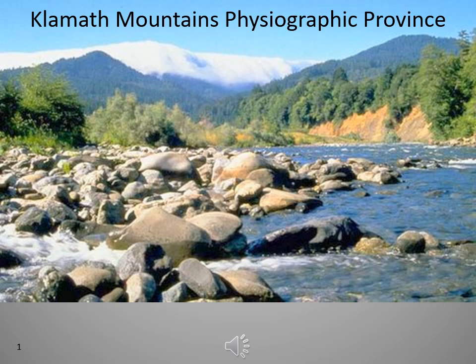Mountains that dominate the province include the 9,000-foot-high Trinity and Salmon Ranges of California, including Preston Peak at an elevation of 7,300 feet, and Mount Ashland at 7,500 feet in Oregon, both in the Siskiyou Mountains. Only the Rogue and Klamath Rivers reach entirely across the province, following a winding course from the Oregon Cascades to the Pacific.